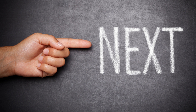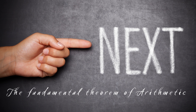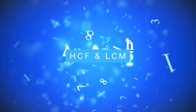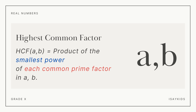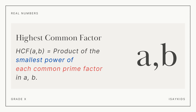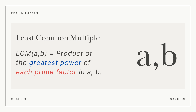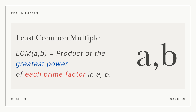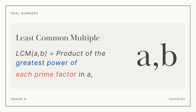Before moving on to the next application of the fundamental theorem of arithmetic, let's revise what LCM and HCF are. HCF, or the highest common factor of two numbers, is the product of the smallest power of each common prime factor — please note: smallest power and each common prime factor. Now, LCM, or least common multiple of two numbers, is the product of the greatest power of each prime factor in the two numbers — greatest power and each prime factor, not just the common one.